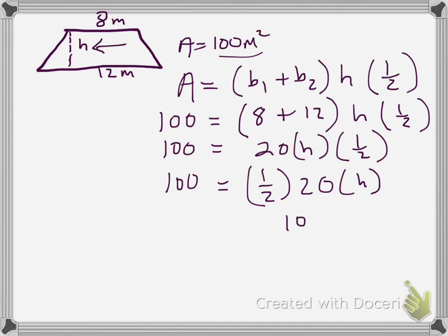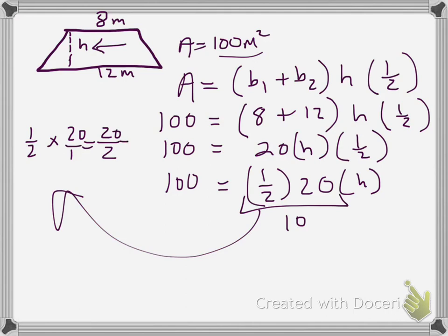Now if you didn't see that, you could always do that off to the side. And 1 half times 20, now I can put 20 over 1 to make that a fraction. And I multiply straight across, and I would get 20 over 2, and 20 over 2 would reduce to 10. So that's where that 10 came from.